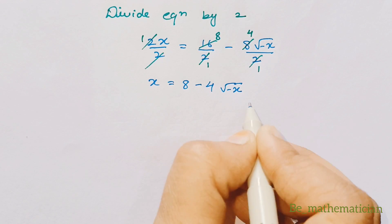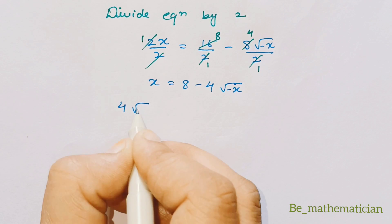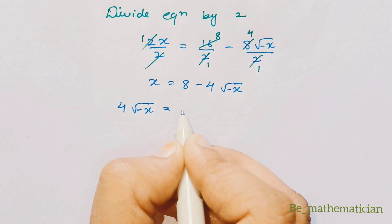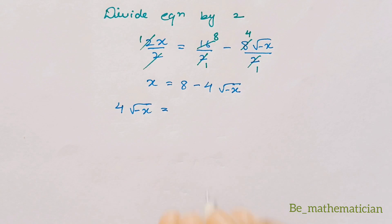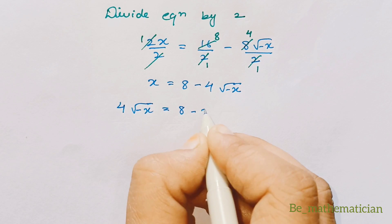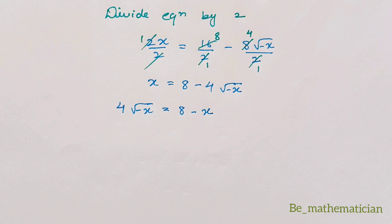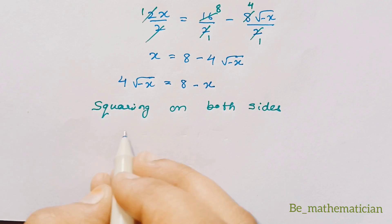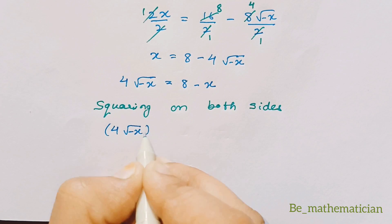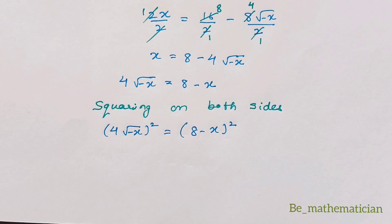By interchanging the terms we can write the equation as 4√(-x) = 8 - x. Again we will do squaring on both sides, so we get (4√(-x))² = (8 - x)².